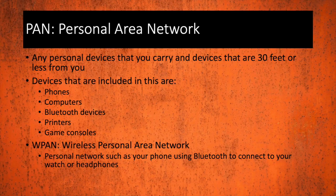PANs are personal area networks. This is basically any device that you carry on you or that is within 30 feet of you. Devices included are phones, computers, Bluetooth devices, printers, and even game consoles. WPAN is a wireless personal area network — basically your phone using Bluetooth to connect to a watch or headphones. It's just a small wireless network.